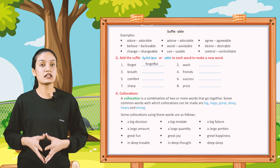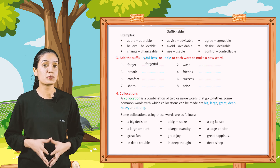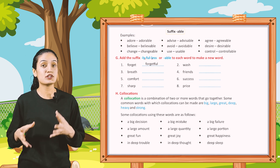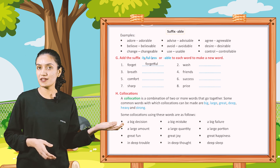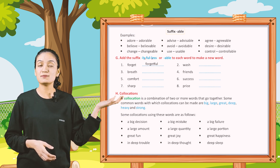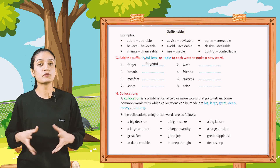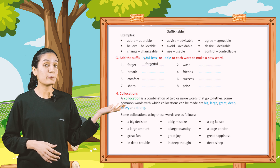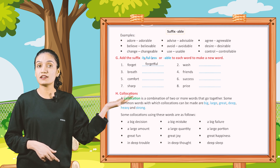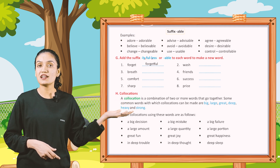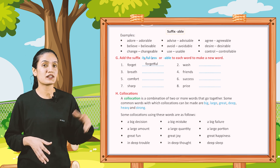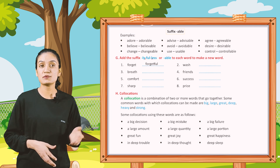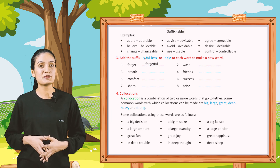Collocations. A collocation is a combination of two or more words that go together. Some common words with which collocations can be made are big, large, great, deep, heavy and strong. Some collocations using these words: A big decision. A big mistake. A big failure. A large amount. A large quantity. A large portion. Great fun. Great joy. Great happiness. In deep trouble. In deep thought. Deep sleep.